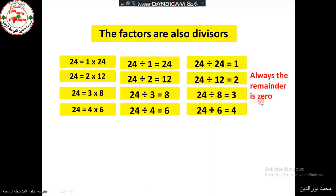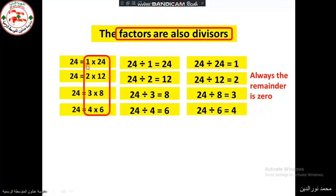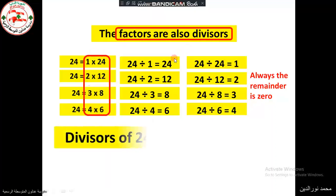As we said, the factors are the divisors. So the factors of 24 are: 1, 2, 3, 4, 6, 8, 12, and 24. All these are the divisors of 24.